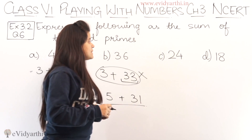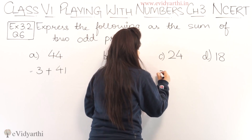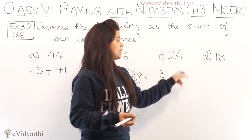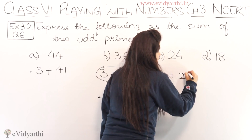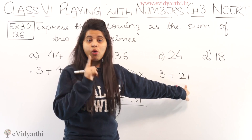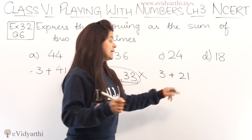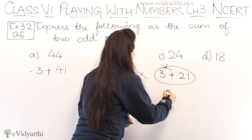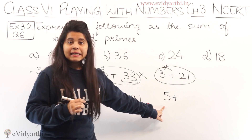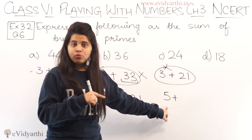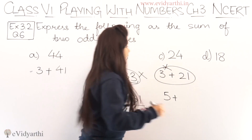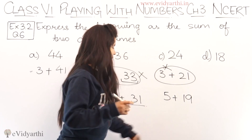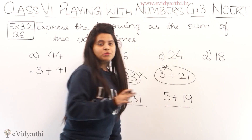Moving to the C part — C part mein number hai 24. Sabse pehle hum 3 ke saath pair bana ke dekhte hain, kyunki 3 hamara pehla odd prime number hai. 24 minus 3 is 21. Lekin 21 odd number hai, but 21 hamara prime number nahi hai. So yeh possible nahi ho sakta. Next hum dekhenge 5: 24 minus 5 is 19. Ab 19 ko agar hum dekhein, to yeh odd number bhi hai aur prime number bhi hai, so yeh ek possible option ho sakta hai: 5 plus 19.